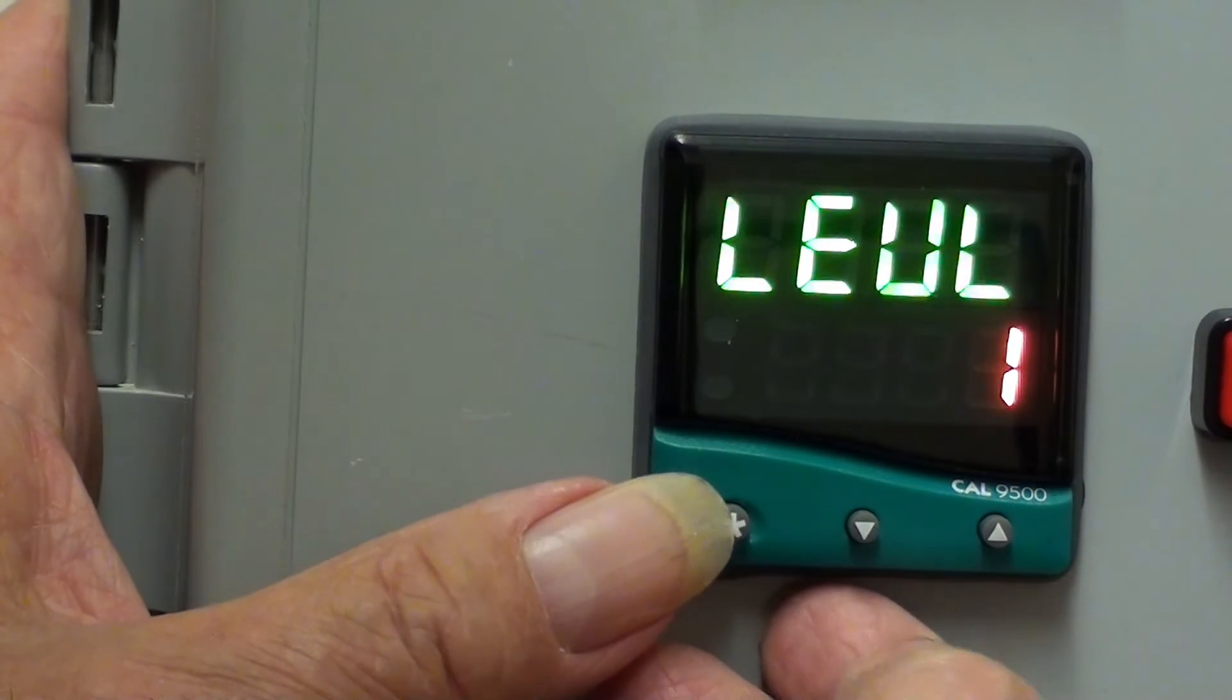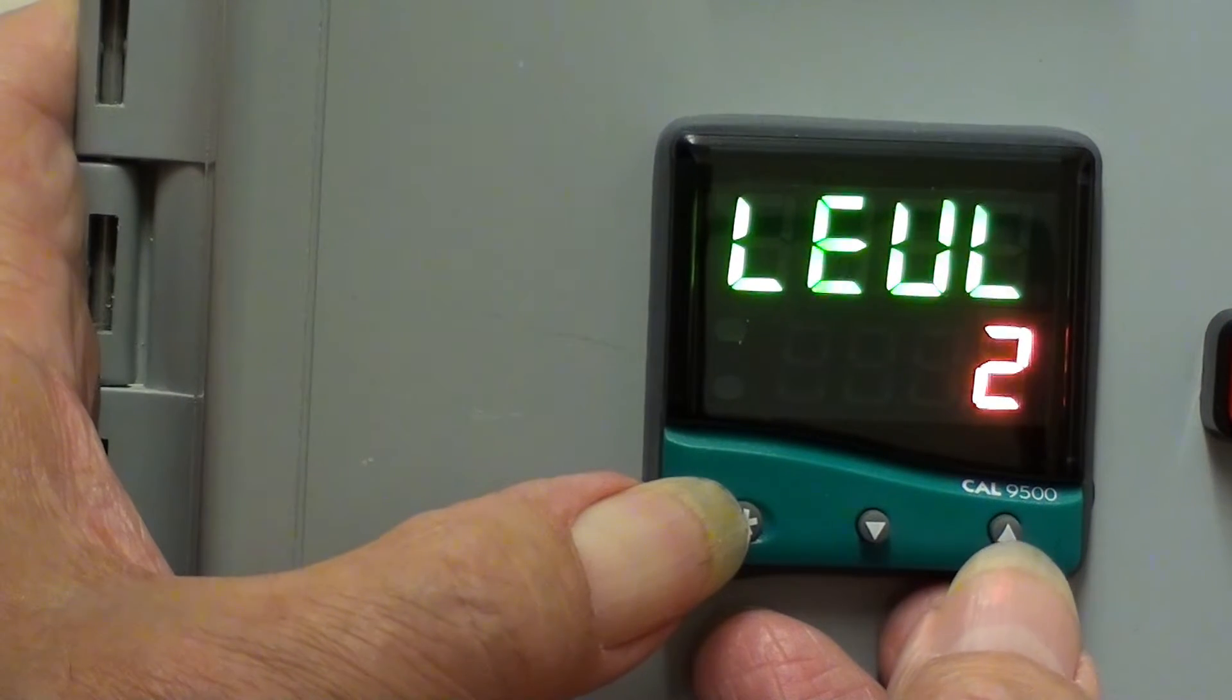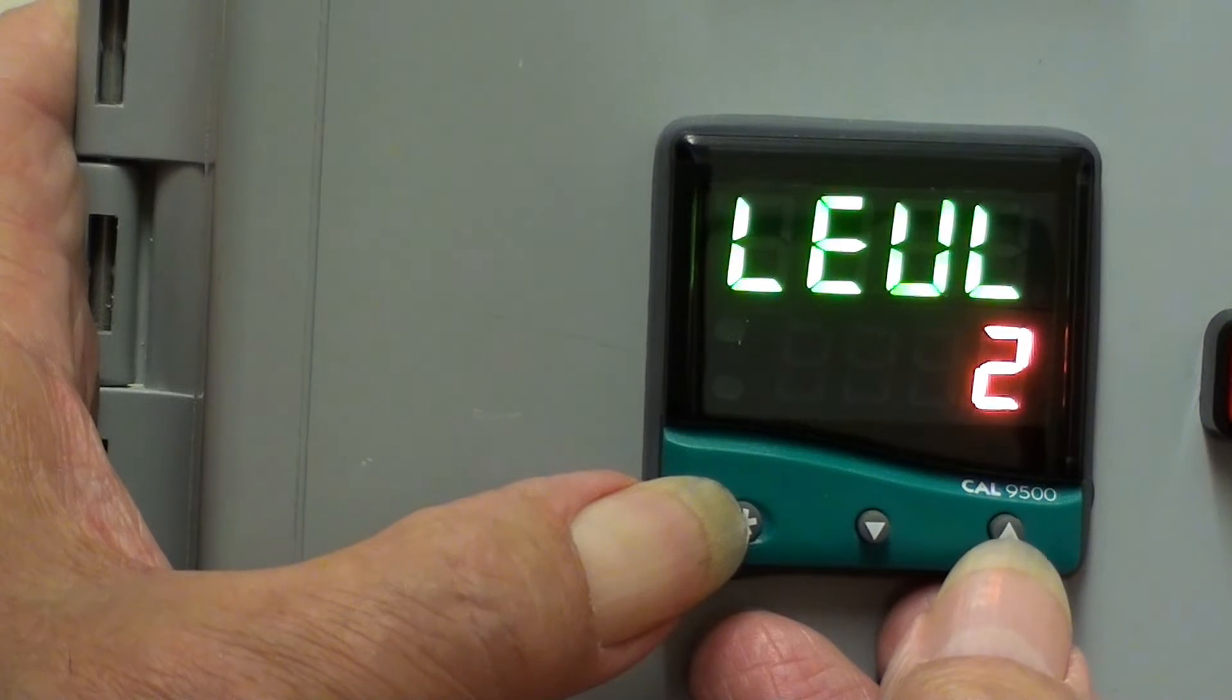To move to the next level, press the scroll, the up. That will take you to level 2, which you've just been in, to set up the sensor input.